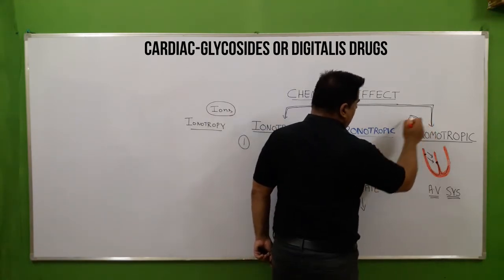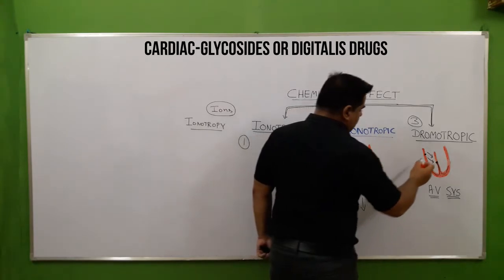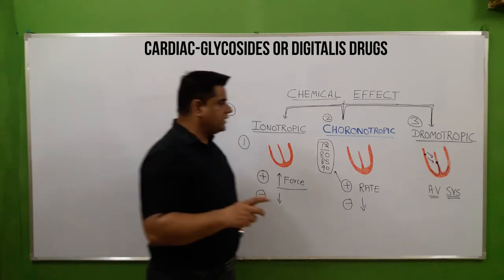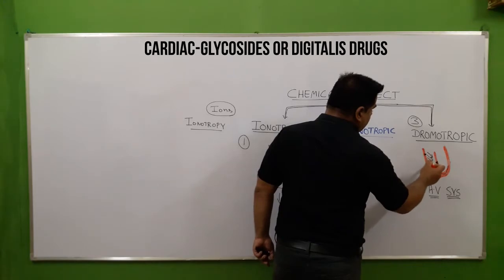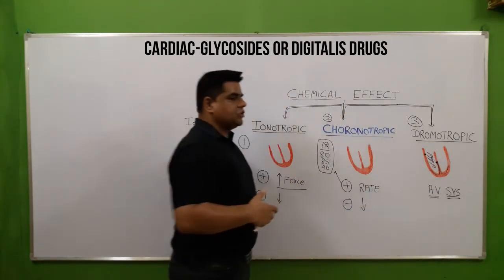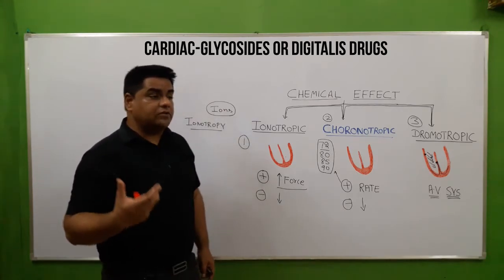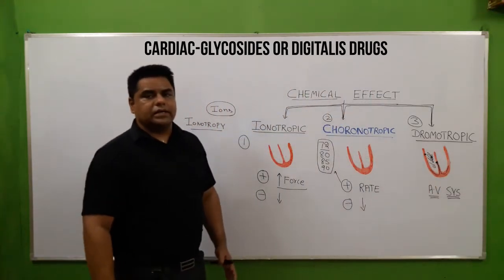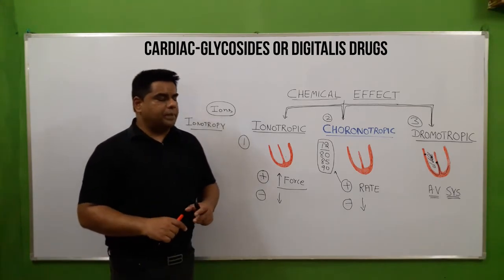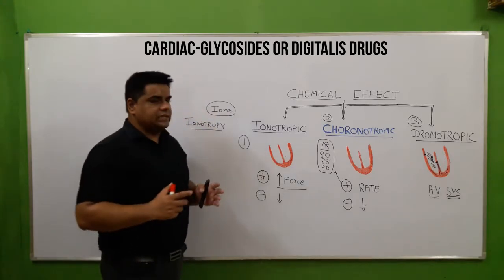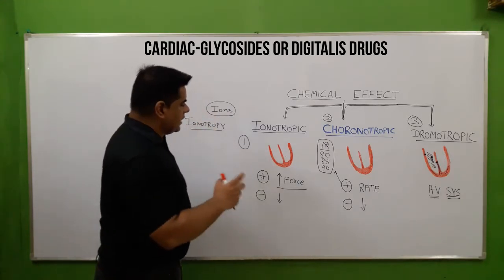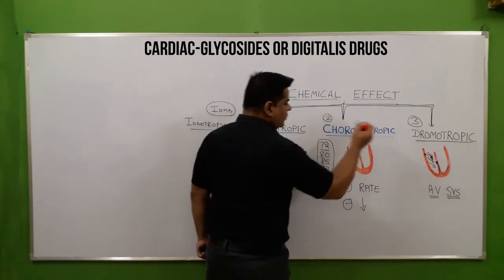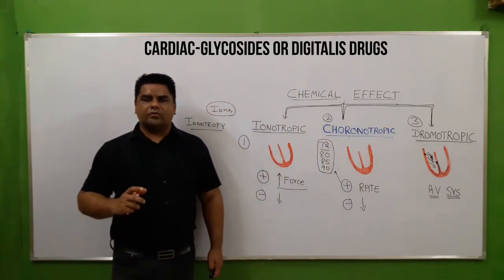The third effect is the dromotropic effect. Under this, the digoxin drug optimizes the atrioventricular conduction system — it is boosted and amplified, working at maximum level, thereby increasing cardiac output or the pumping force of the heart. So digoxin or Lanoxin works by three ways: inotropically, chronotropically, and dromotropically.